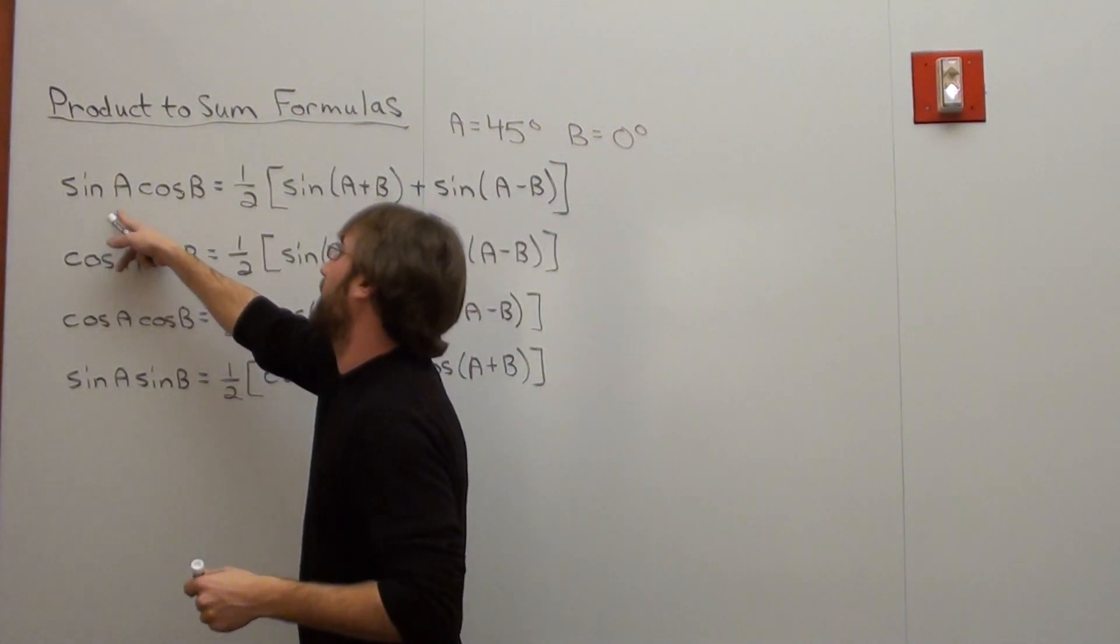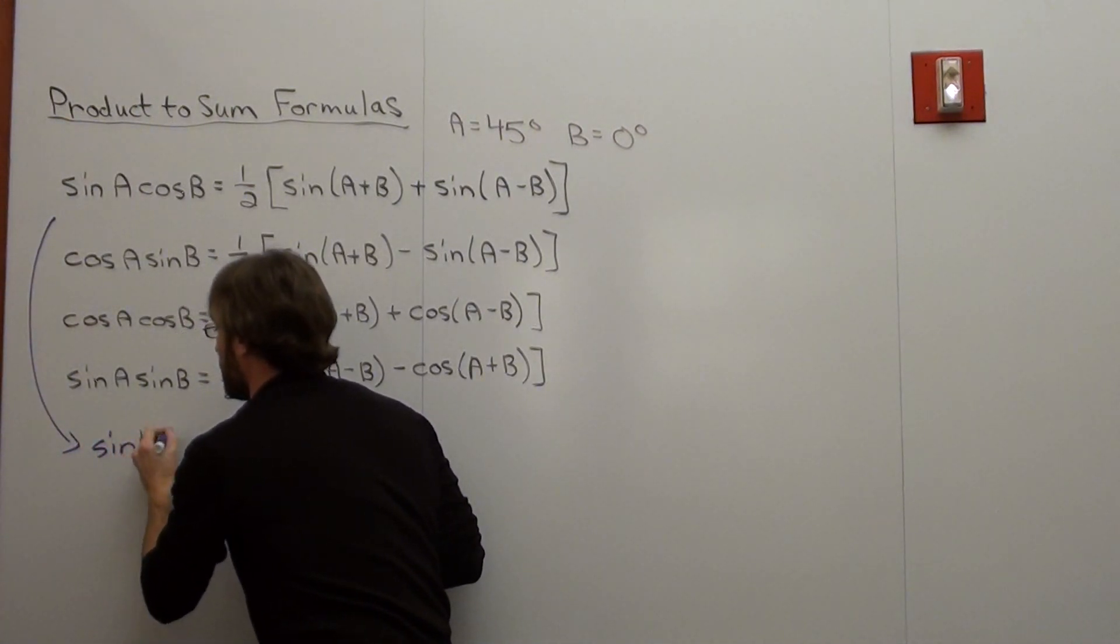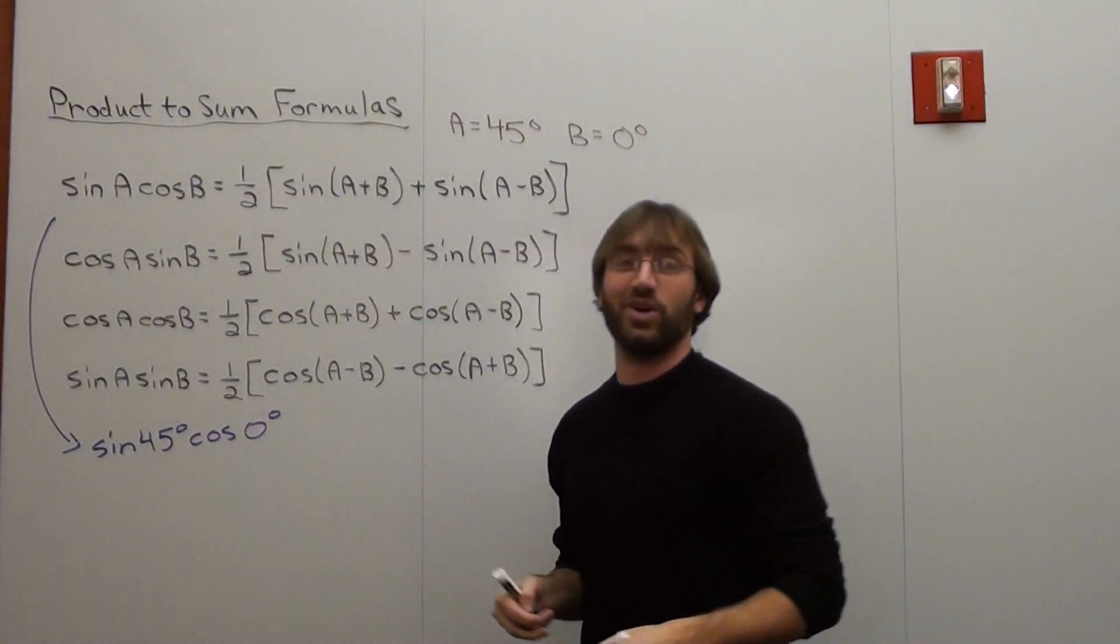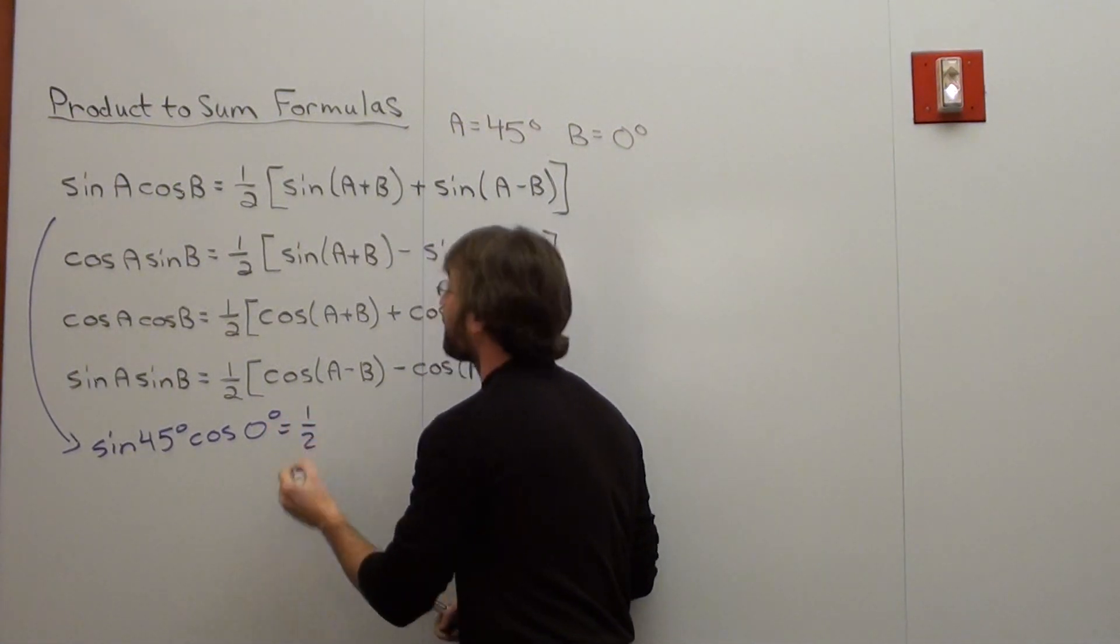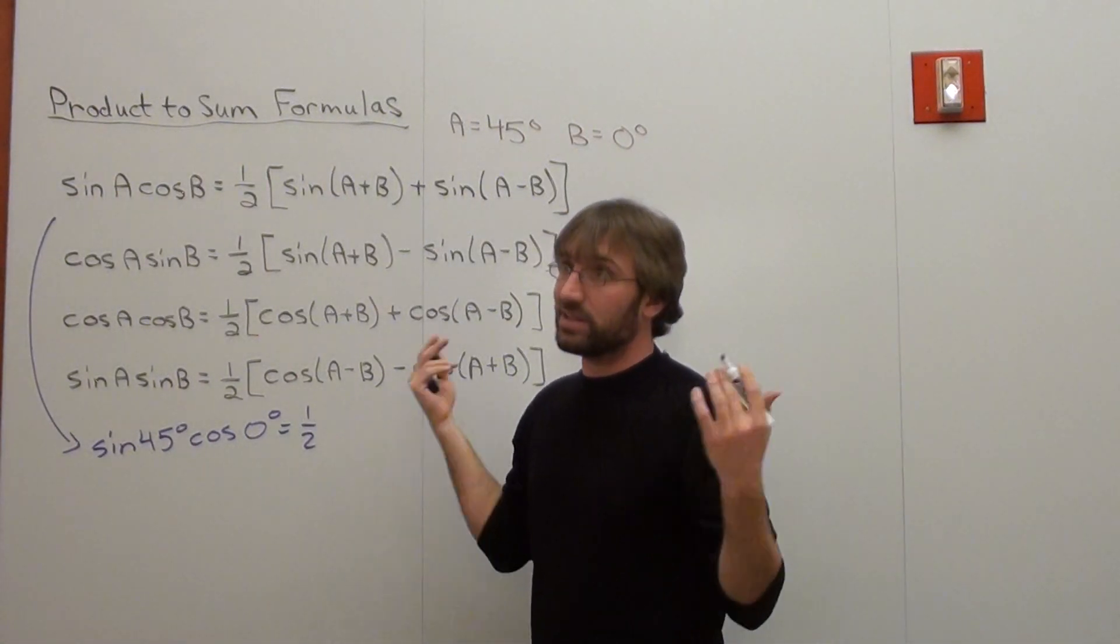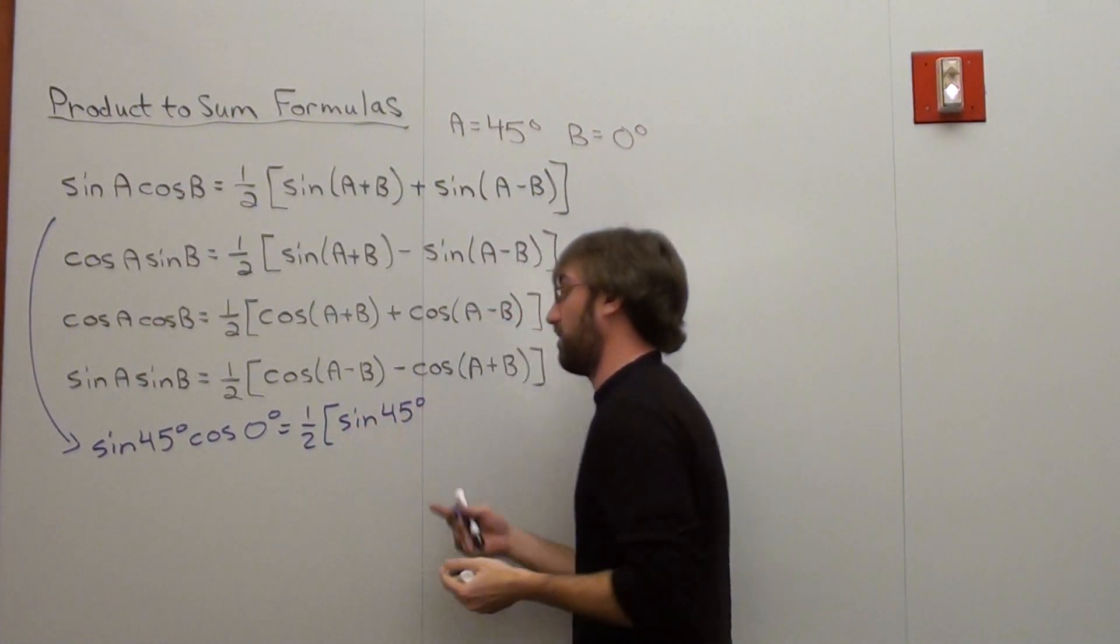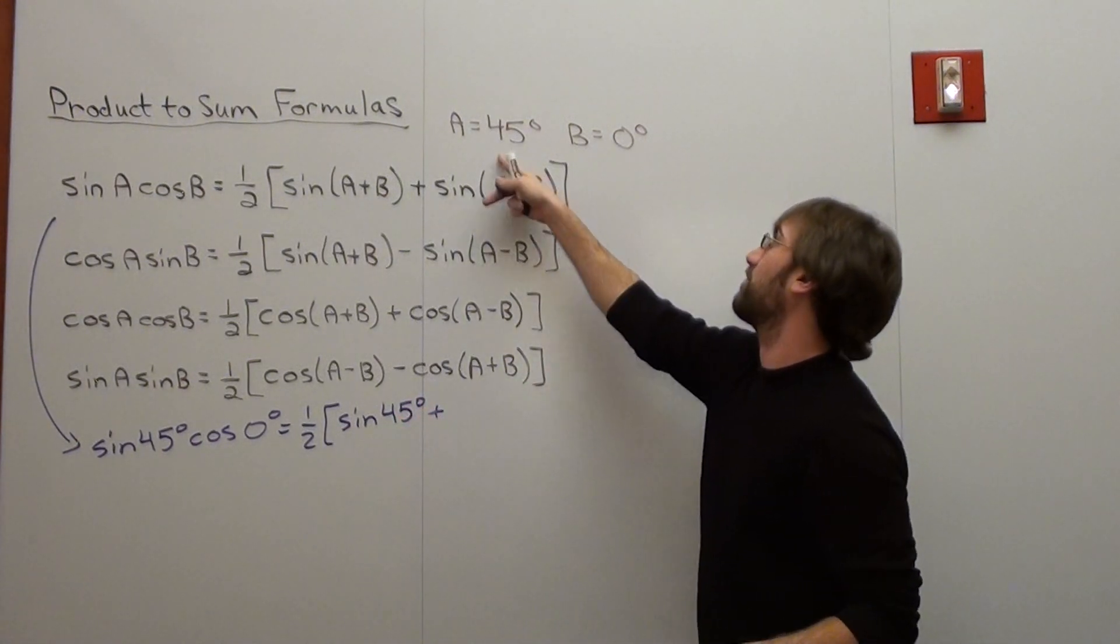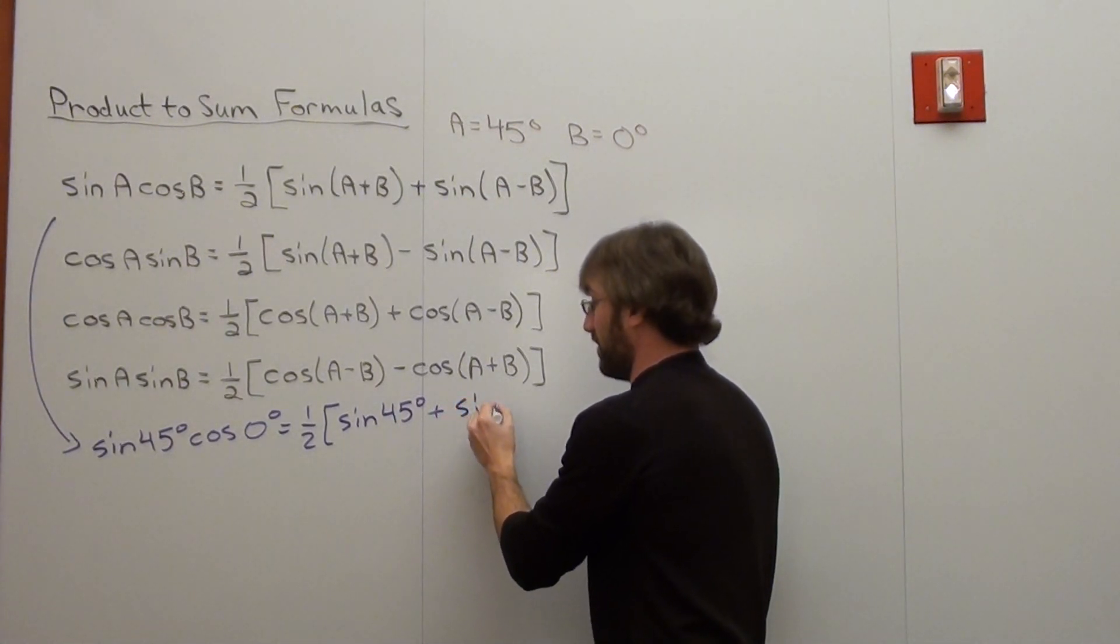So the sine of A cosine of B is the sine of 45 degrees times the cosine of zero degrees. Why would you want to know that? Because it's helpful. That's going to be equal to one half times the sine of A plus B, so 45 plus zero, which is 45. Then I'm going to add it to sine of A minus B. Well, it's 45 minus zero, which again is 45. That worked out very well for me.